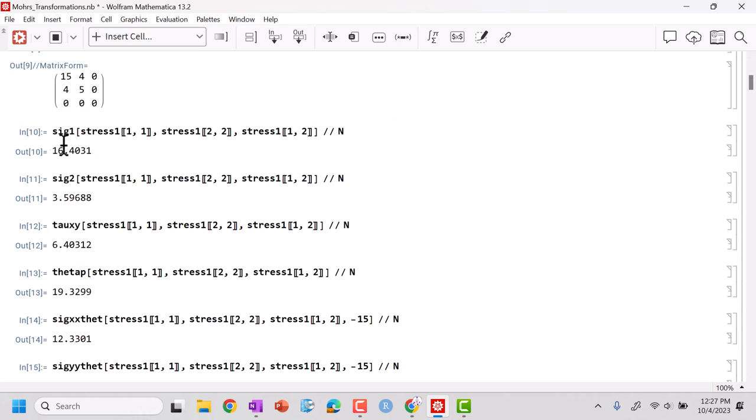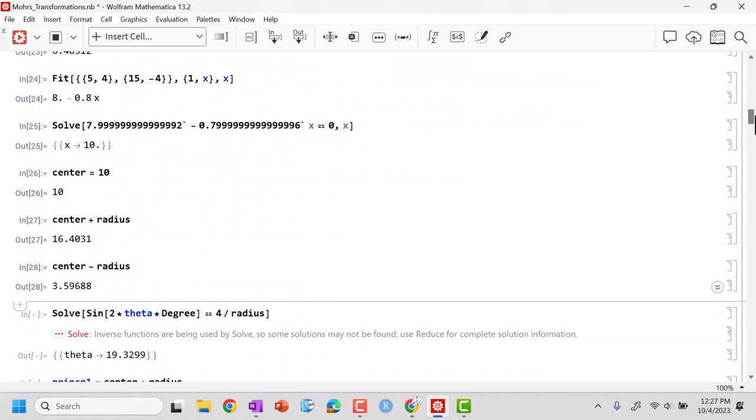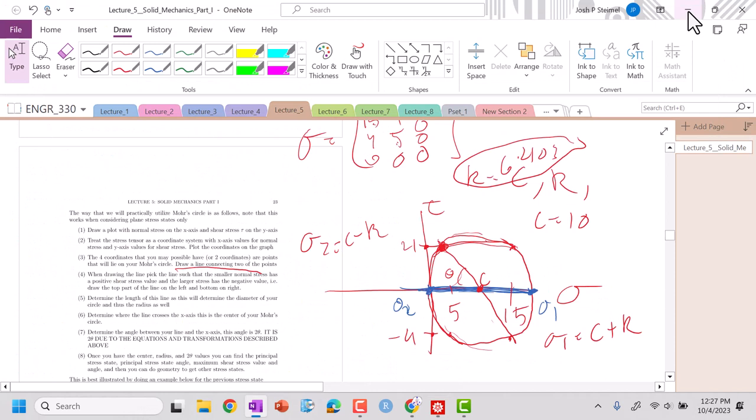16.4. Where have we seen that before? Oh, do you see sigma 1 right here? That's the value. What about sigma 2? Sigma 2 is 3.5986. We got it. Fantastic.